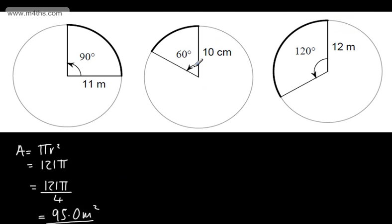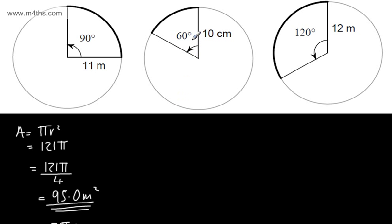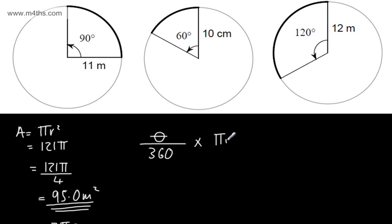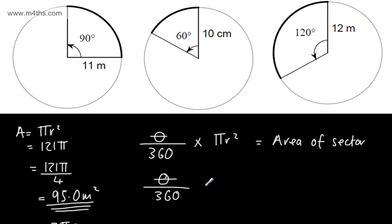With 60 degrees, 60 of 360 is one sixth, so we divide our answer by six. With 120 degrees, we multiply our answer by a third or divide by three. In general, what we do is put the angle — I'm going to call it theta — divide it by 360, and multiply it by πr² for the area of a sector. And theta over 360 multiplied by the circumference 2πr gives us the arc length.